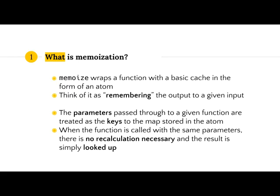The parameters passed to any memoized function are treated as keys to a map in an atom. When the function is called again with any parameters, it tries to look up that key. If the key exists, it just returns the value — no reevaluation needed. But if it doesn't exist, it evaluates it, stores the result in the atom, and next time the same function is called, you get the output without any recalculation.